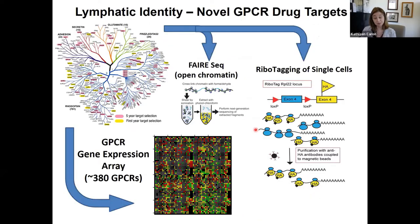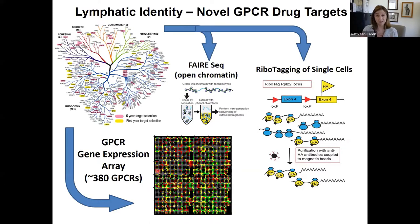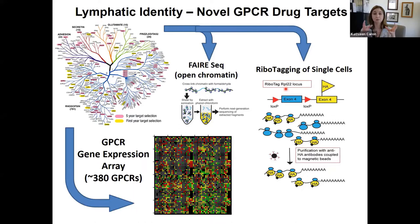We've leveraged a variety of approaches focused on lymphatic endothelial cells to identify orphan receptors as future therapeutic targets for lymphatics. One approach was a GPCR expression array comparing relative expression levels between lymphatic endothelial cells and blood endothelial cells. We coupled this with FAIRE-seq — the open chromatin landscape of lymphatic endothelial cells — and ribotagging of bulk cells isolated from tissues, to identify key targets.